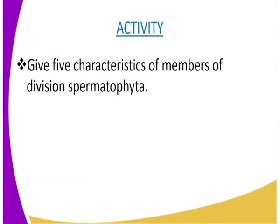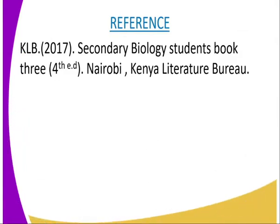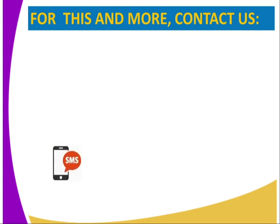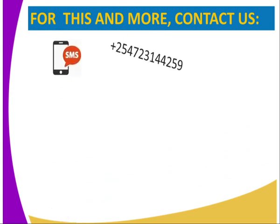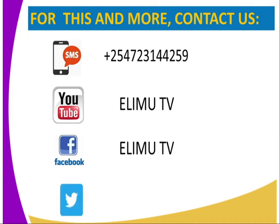Having done and said that, we can have the following activity: give five characteristics of members of the division Spermatophyta. For more information on this lesson, you can refer to KLB Secondary Biology, Students Book 3, Nairobi — that is, Kenya Literature Bureau. To get this lesson and many more of our biology lessons, you can send us an SMS to the number appearing on our screen, or subscribe to our YouTube or Facebook page under Elimu TV, or tweet us at ElimuTV underscore Kenya.